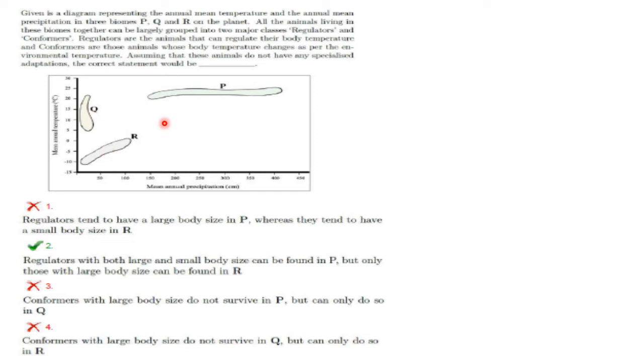Now Bergman's rule states that body size is large in cold climates and small in warm climates. So regulators with both large and small body size can be found in P. But only those with large body size can be found in R, because R is arctic or alpine tundra. It is a cold climate and will have those with large body size. So option 2 is correct.